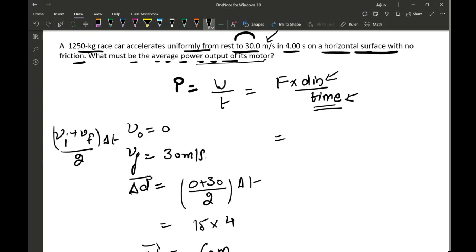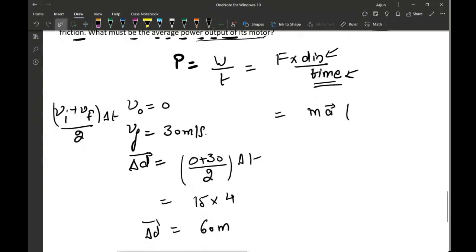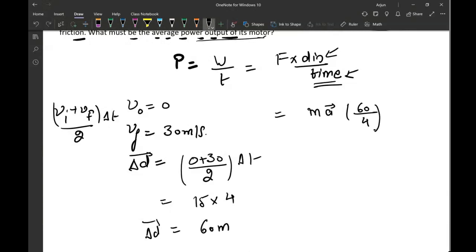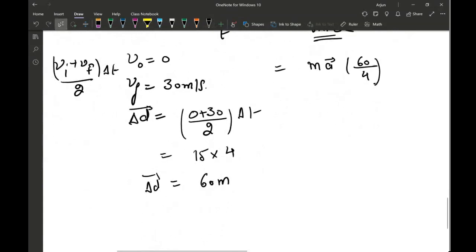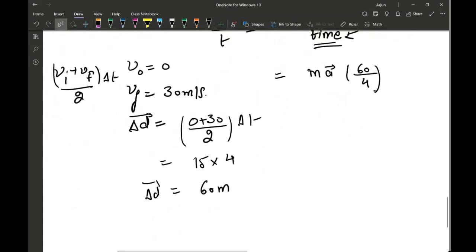I'm not provided with the acceleration also. And this distance is 60 meters, time is 4. So I'm stuck here again. But I can find the acceleration also because we have the different parameters.